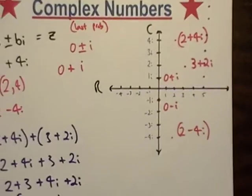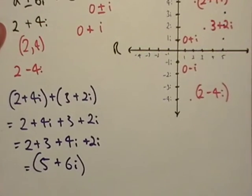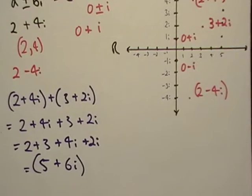You can believe me that it's up there for 5 plus 6i. So it would be up there. So basically that's how the complex plane works.